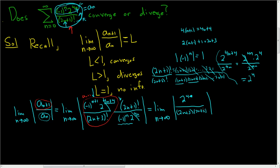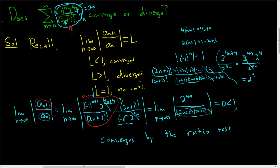If you take this limit, you just get 0. That's less than 1, so this converges by the ratio test. Why is it 0? Well, as n goes to infinity, the stuff on the bottom goes to infinity, so the fraction gets really close to 0. Hopefully that made some sense, and hopefully this helps someone working on the ratio test.